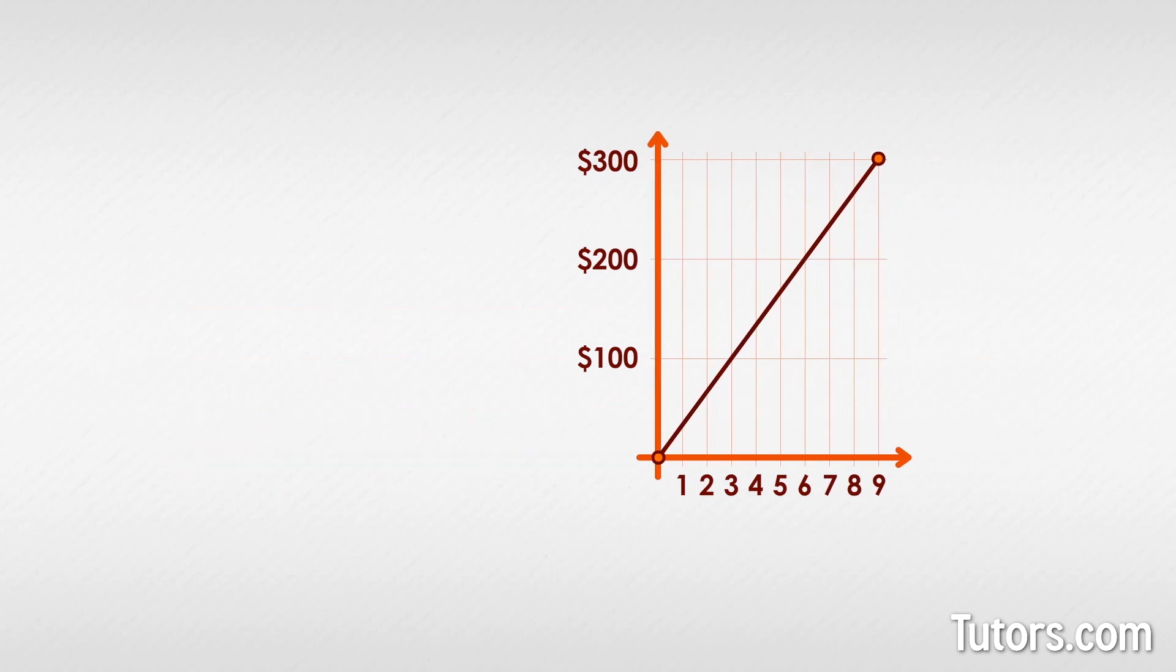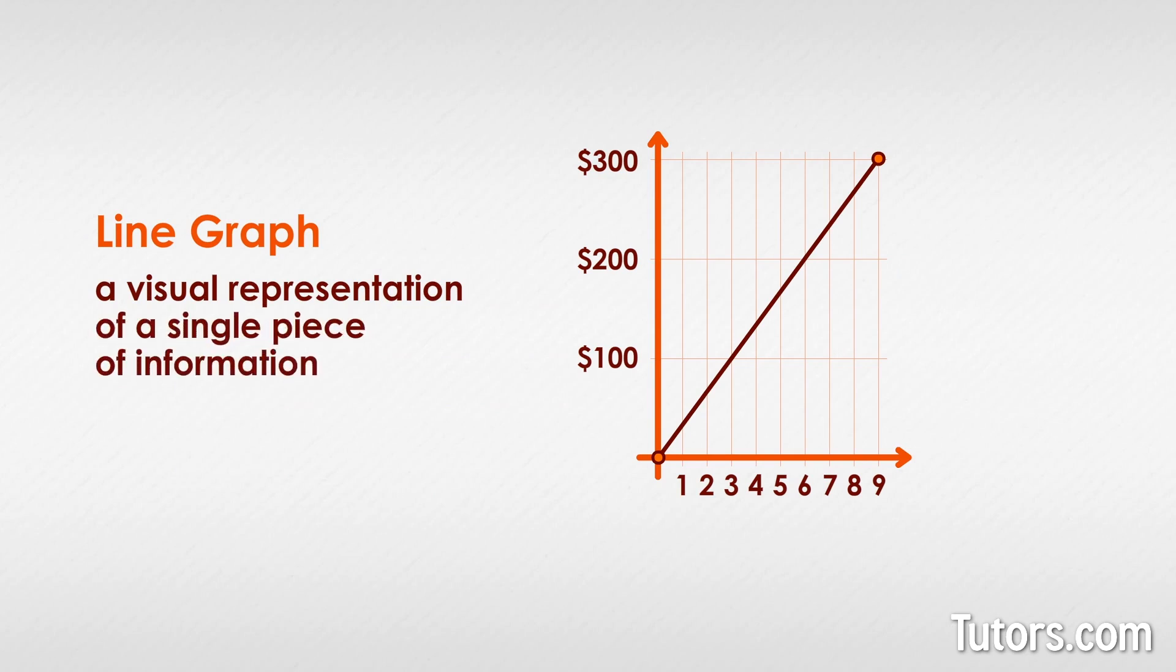So what is a line graph? A line graph is a visual representation of a single piece of information tracked over time. You can see line graphs with multiple lines, but each line tracks one idea and is moving through time from earlier time on the left to more current time on the right.